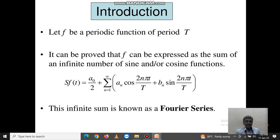Introduction: Let f be a periodic function of period T. It can be proved that f can be expressed as the sum of an infinite number of sine and cosine functions. That is, Sf(t) = a₀/2 + Σ(n=1 to ∞)[aₙcos(2nπt/T) + bₙsin(2nπt/T)]. This infinite sum is known as a Fourier series.